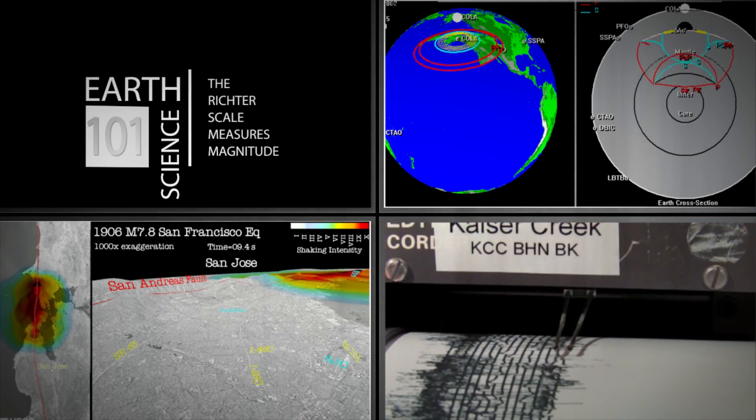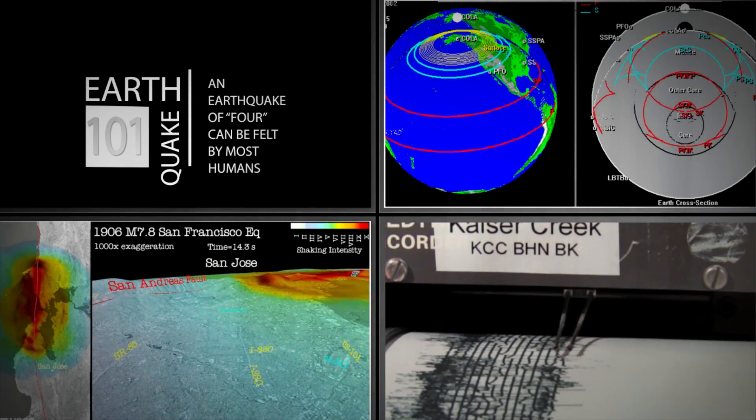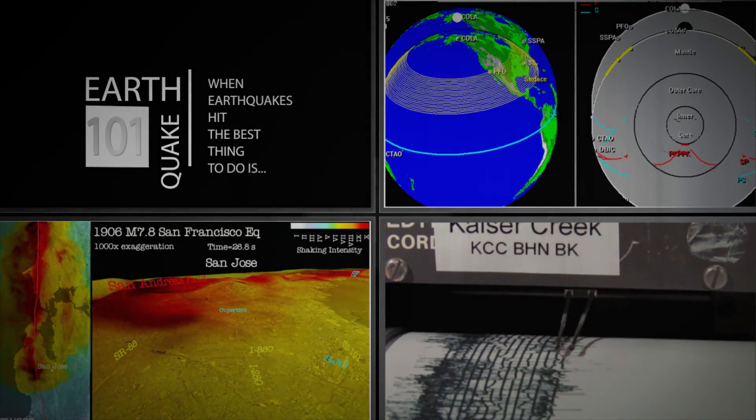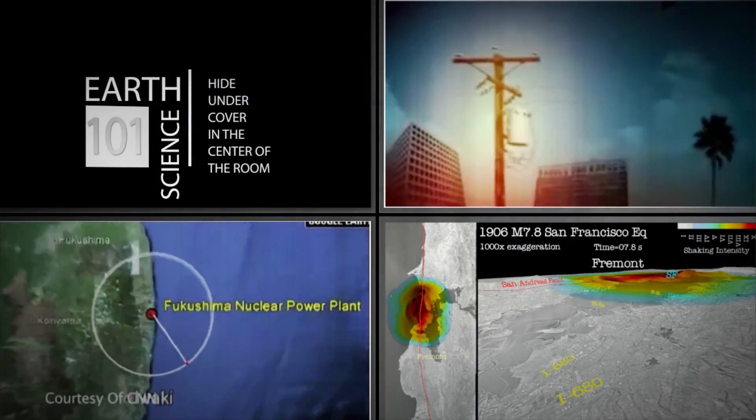The Richter scale measures magnitude. An earthquake of four can be felt by most humans. Two means small and seven means huge. When earthquakes hit, the best thing to do is drop and cover in the center of the room in buildings designed to stand through.